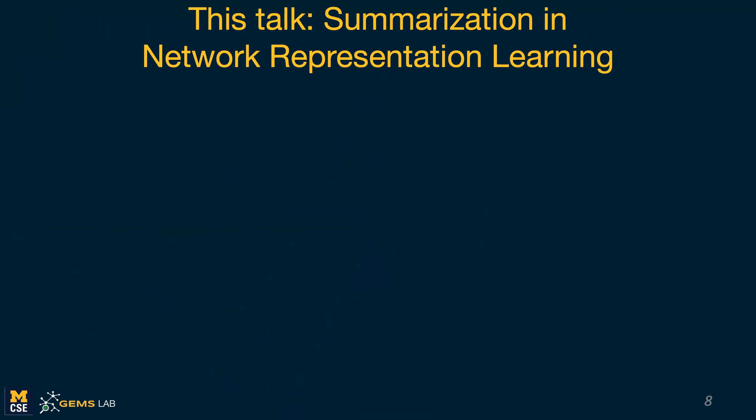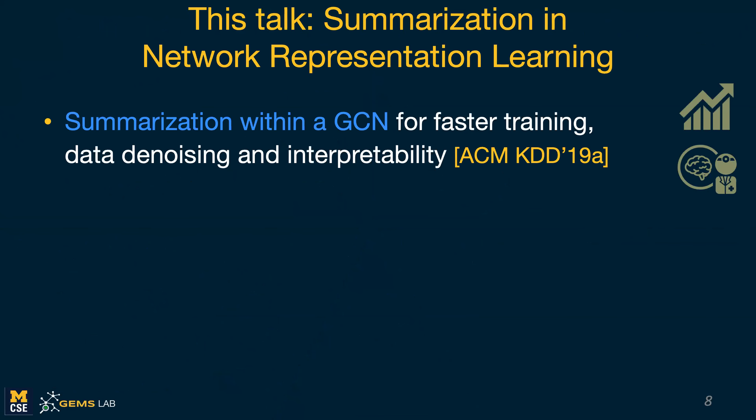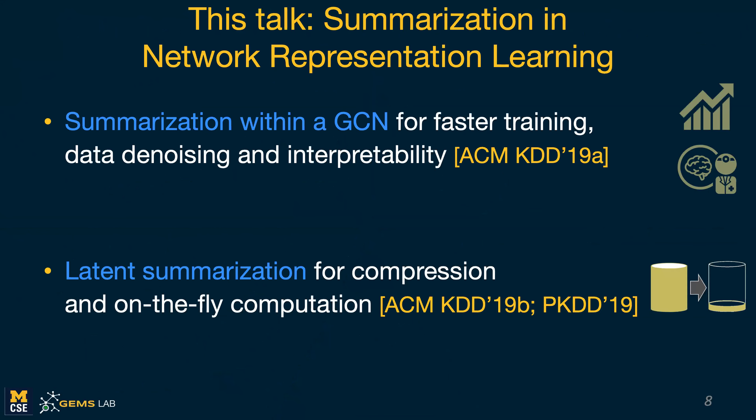In this talk, I will focus on summarization in network representation learning. I'll cover two different directions. One has to do with leveraging summarization within graph convolutional networks — we'll see that this can help us with faster training, denoising the data, and also gaining interpretability. The second direction is what we call latent network summarization, which can be used for compression and on-the-fly computation of node embeddings.